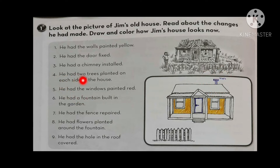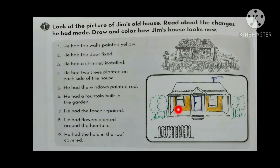Number four: he had two trees planted on each side of the house. He had two trees here and two trees here. Two on each side of the house. He had two trees planted on each side — he didn't plant the trees himself. Someone did it for him.